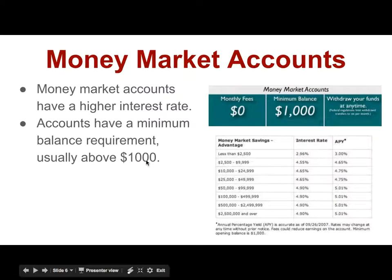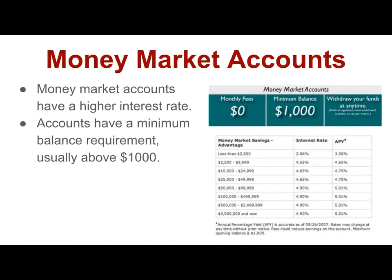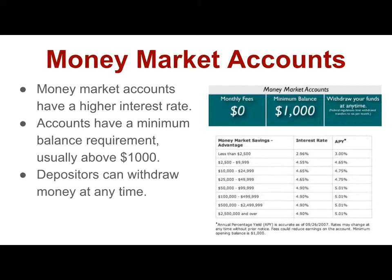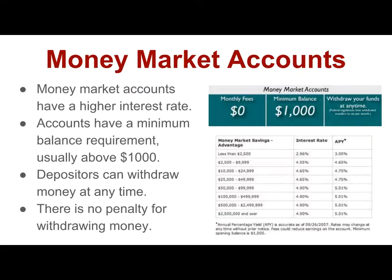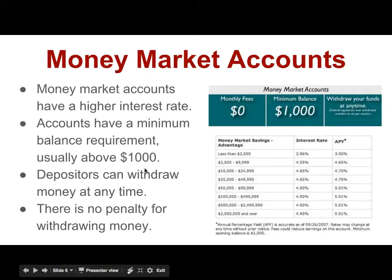A disadvantage of a money market over a savings account is that there is a minimum balance requirement, almost always above $1,000, and in lots of them you'll see $2,500 minimums as well. So for a money market account, you have to have money in order to set up that account, whereas with a savings account that's not true. An advantage is that depositors can withdraw their money at any time with no penalty. So the advantages are flexible withdrawal, no penalty, and a higher interest rate, with the disadvantage of needing a significant minimum balance to start.